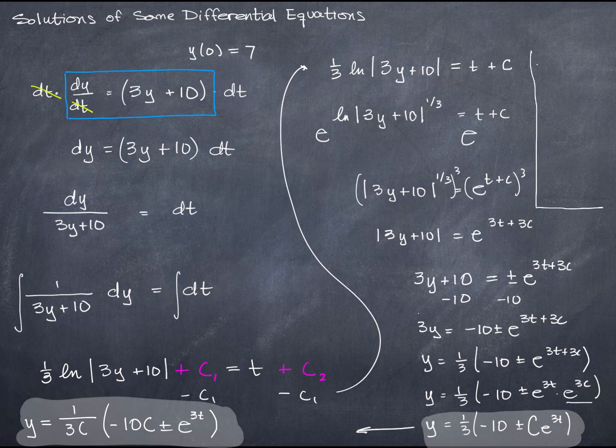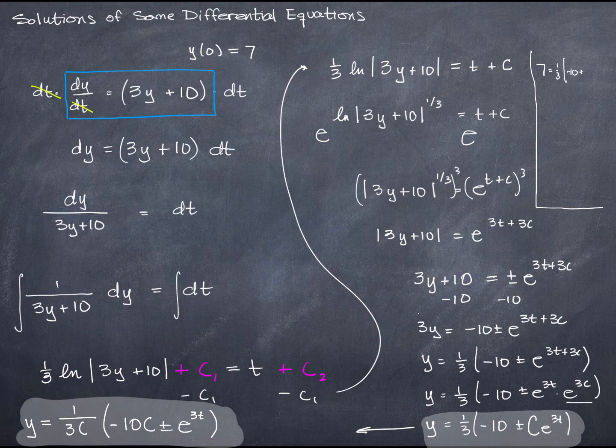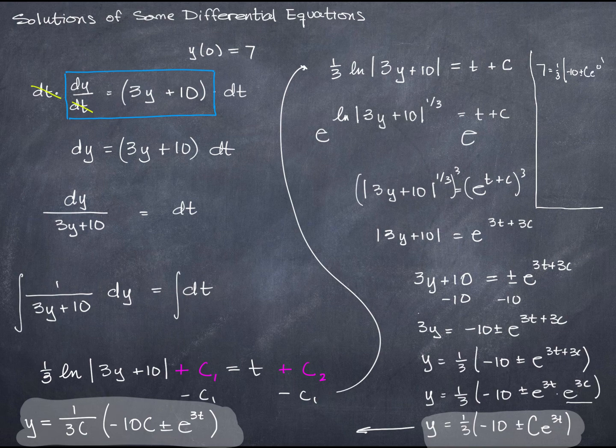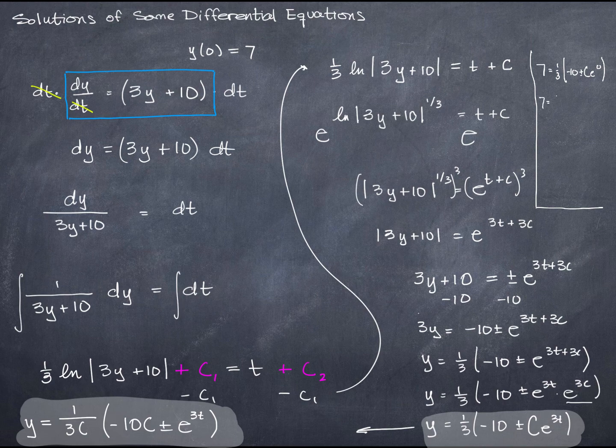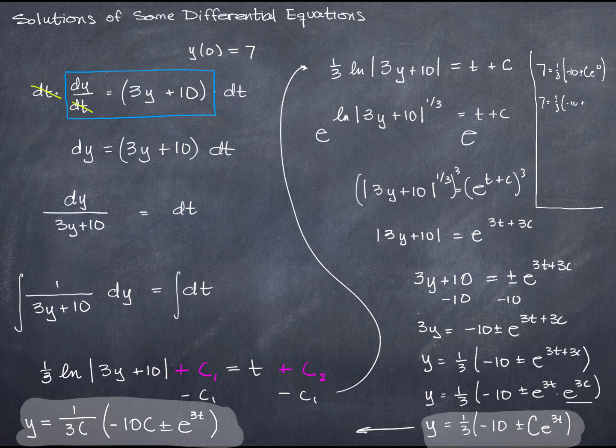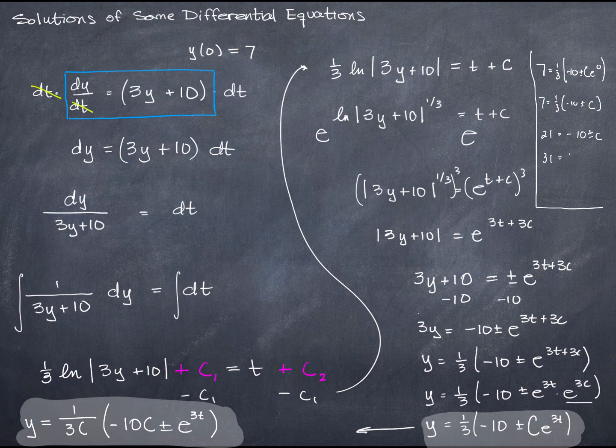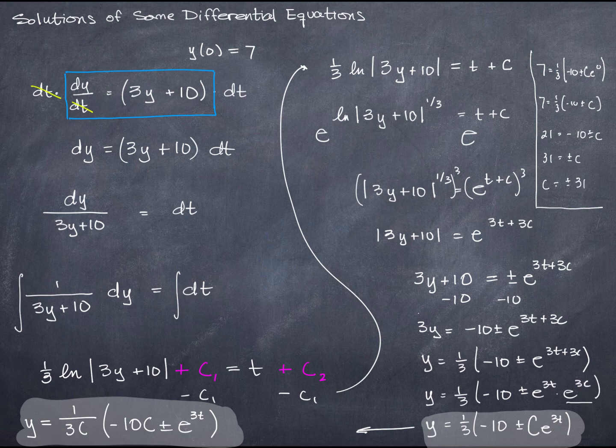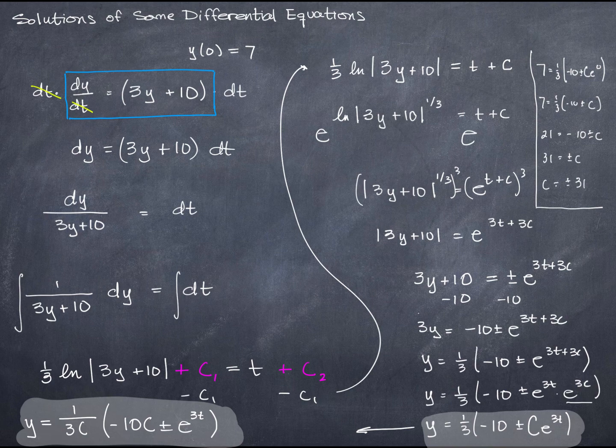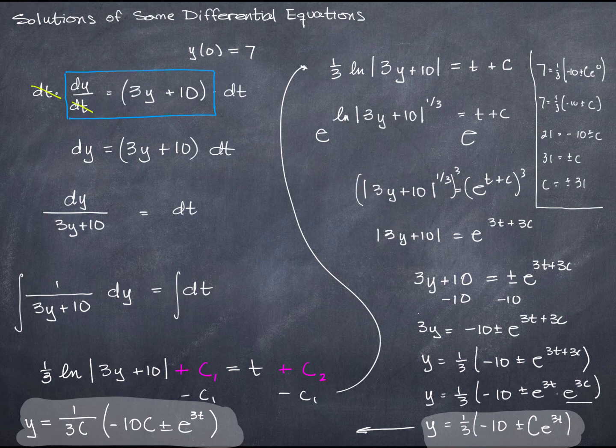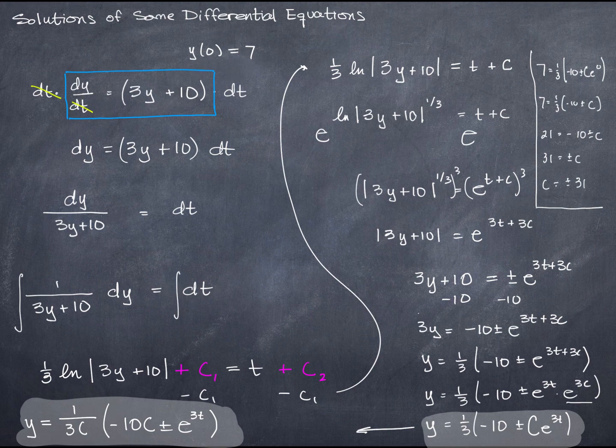What this tells me is that when time is 0 or when t equals 0 the y value is 7 and that means that I could plug 0 in for t into my solution here and 7 in for y and that leaves then just the c as an unknown value I know what t is and I know what y is for at least one particular situation and I can use that information to find c. When y is 7 e to the 3t because t is 0 so e to the 0 is 1 so that gives me 7 equals 1 third times negative 10 plus or minus c times 1 and if I multiply both sides by 3 I get 21 equals negative 10 plus or minus c add 10 to both sides so c is either plus or minus 31.